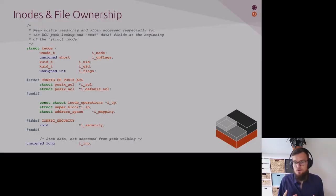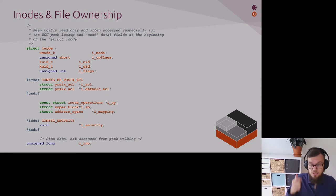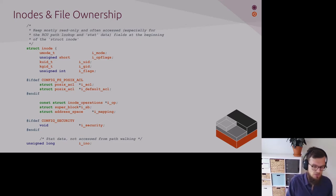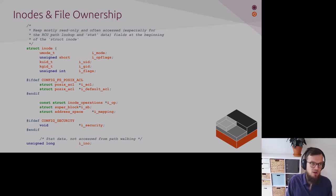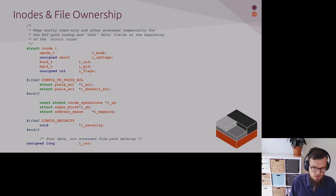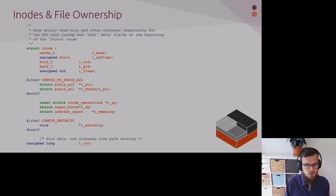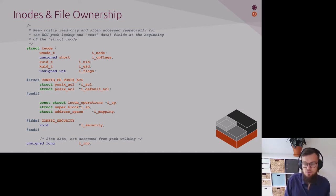Once the superblock has been created and the file system has been exposed in the hierarchy, the files and directories can be accessed by users on the system. In order to facilitate very fast access times, the kernel maintains various caches, including the so-called dcache or dentry cache, and the icache or inode cache. We won't be concerned with the dcache, and we will only look at the icache at a high level here. It would be very costly if every time the kernel needed to do permission checking, it had to call into the actual file system and query it for information.